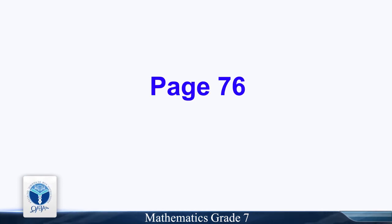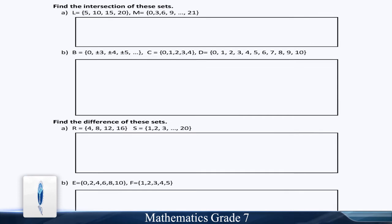Page 76. Find the intersection of these sets. Part A: L is equal to 5, 10, 15, 20. M is equal to 0, 3, 6, 9, up till 21.